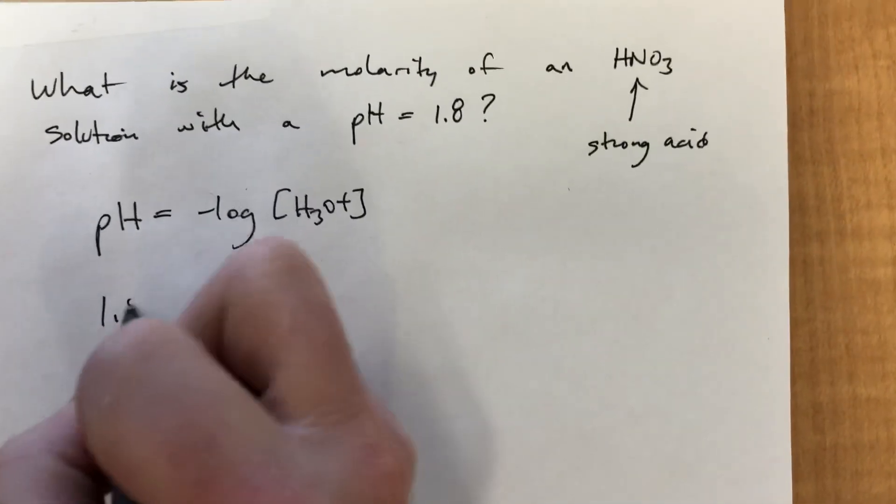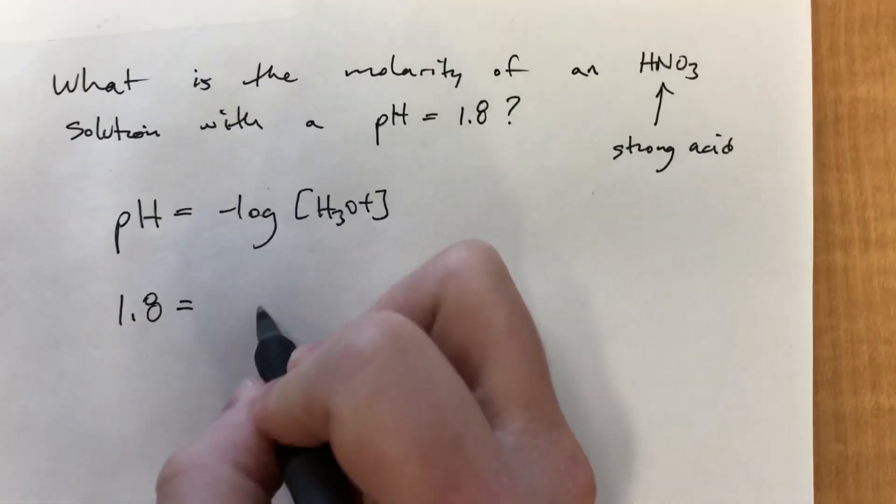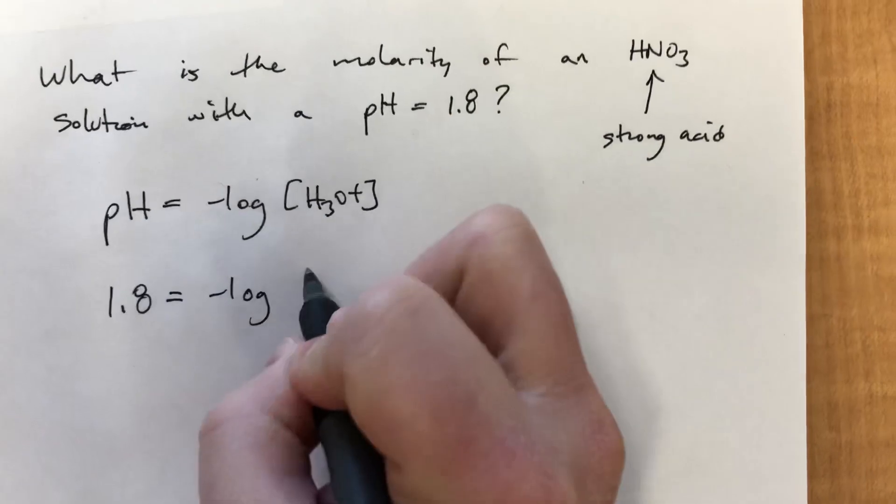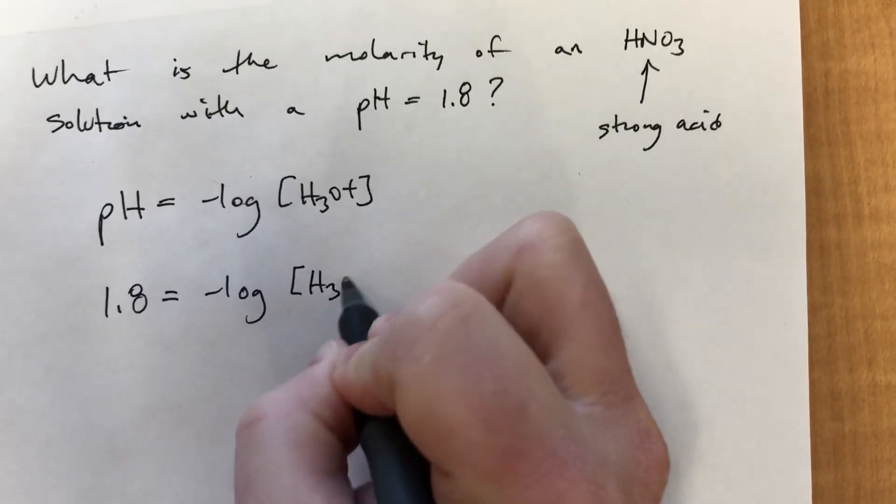So our pH is 1.8, and this is equal to the negative log of concentration of H3O+.